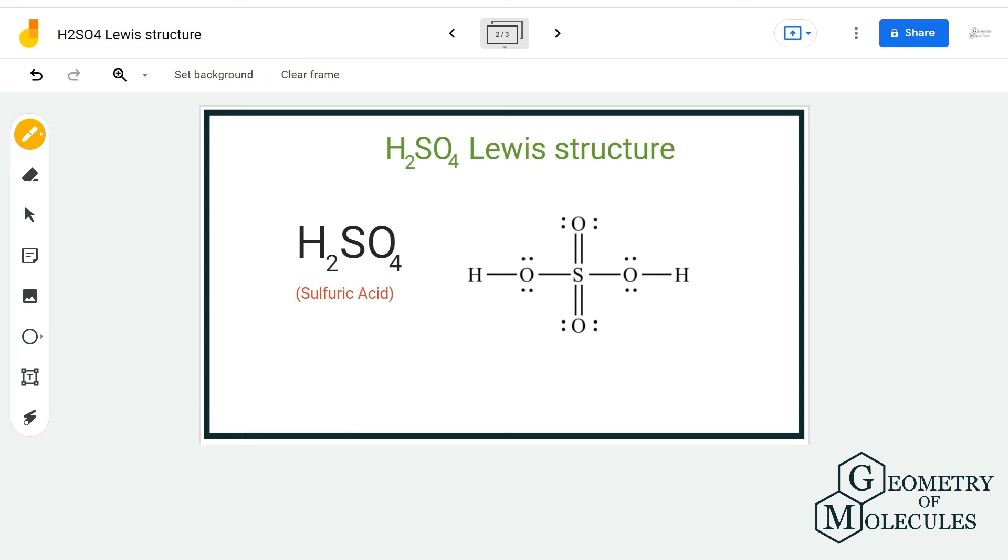And now that we have shifted pairs of electrons, the formal charges for all atoms in this molecule is zero. So this is the Lewis structure of H2SO4 in which sulfur forms these kinds of bonds in this molecule.